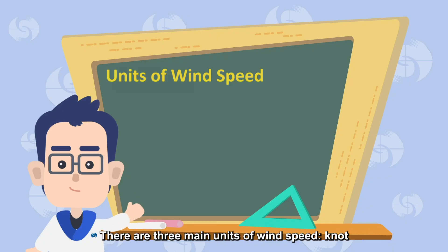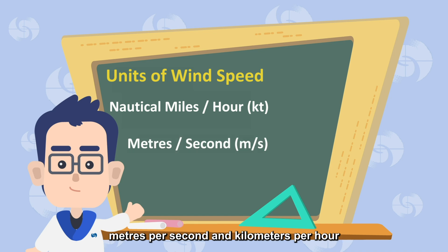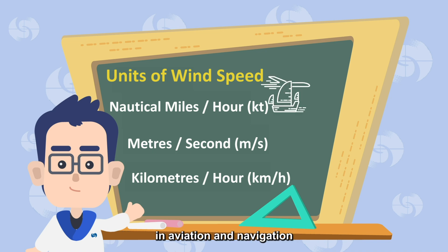There are three main units of wind speed: knot, meters per second, and kilometers per hour. Knot is the speed unit commonly used in aviation and navigation. Meters per second is the international unit, and kilometers per hour is the commonly used speed unit for Hong Kong weather reports.